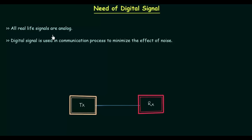In this presentation we will discuss the advantage of digital signal over analog signal. Digital signal is used in communication process to minimize the effect of noise. So basically we are going to focus how the noise is minimized by using the digital signal.